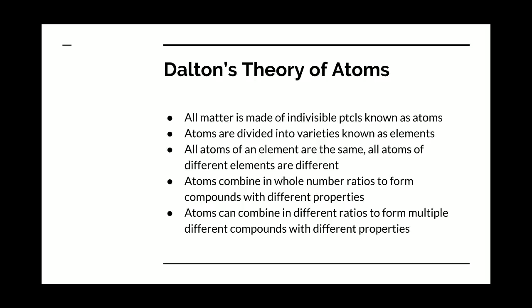Atoms combine in whole number ratios to form compounds with different properties. For example, water is two atoms of hydrogen and one atom of oxygen. Carbon dioxide is one atom of carbon and two atoms of oxygen. Table salt, sodium chloride, is one atom of sodium and one atom of chlorine. They form in whole number ratios. That was really what drove him to the conclusion that atomic theory had to be correct. Otherwise, it didn't make sense why reactions always proceed with the same quantities.